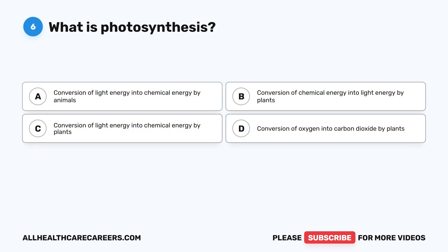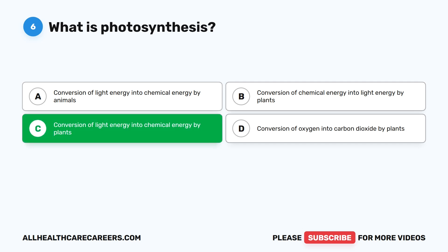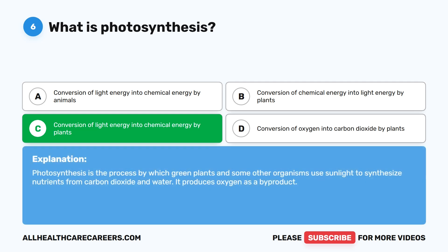Question six: what is photosynthesis? A. Conversion of light energy into chemical energy by animals. B. Conversion of chemical energy into light energy by plants. C. Conversion of light energy into chemical energy by plants. D. Conversion of oxygen into carbon dioxide by plants. The correct answer is C. Photosynthesis is the process by which green plants and some other organisms use sunlight to synthesize nutrients from carbon dioxide and water. It produces oxygen as a byproduct.